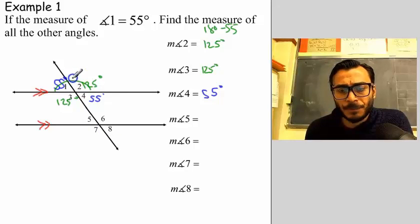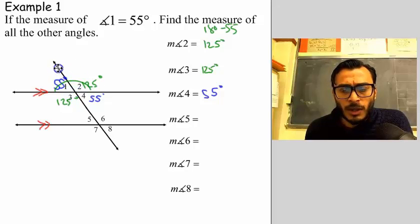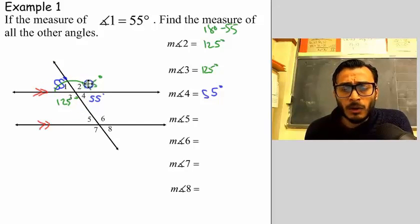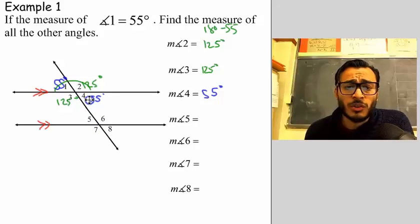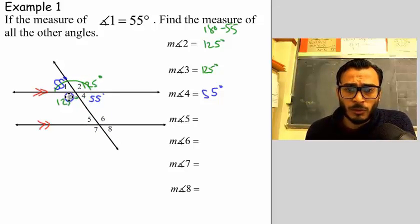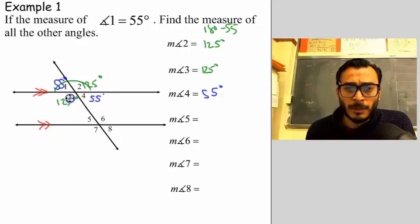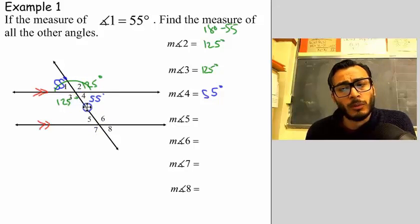You'll see that we have obtuse angles and we have acute angles. All the obtuse angles are equal to each other — which are the obtuse ones? Angle two, angle three, angle six, and angle seven. All the obtuse angles are equal to each other.